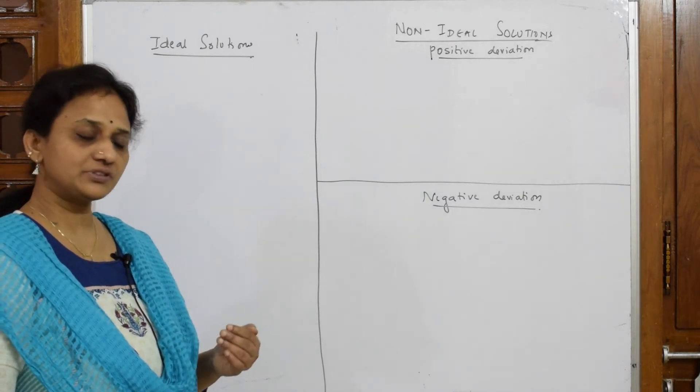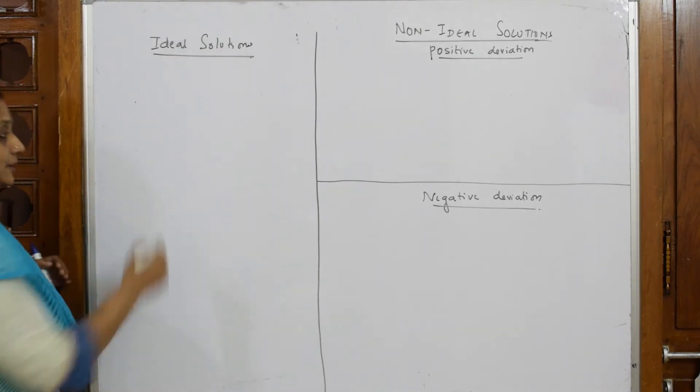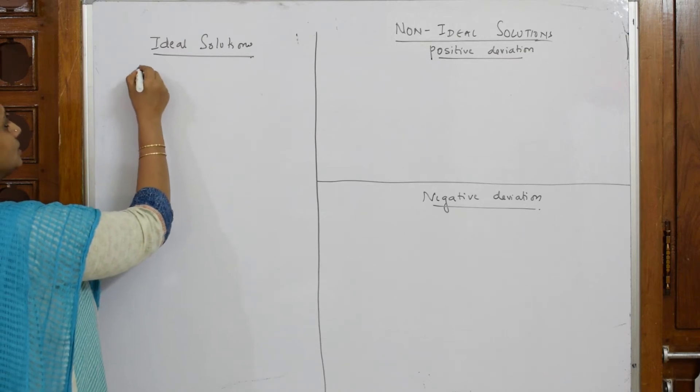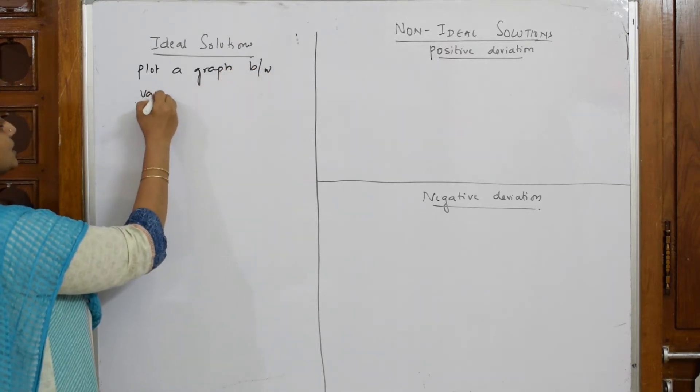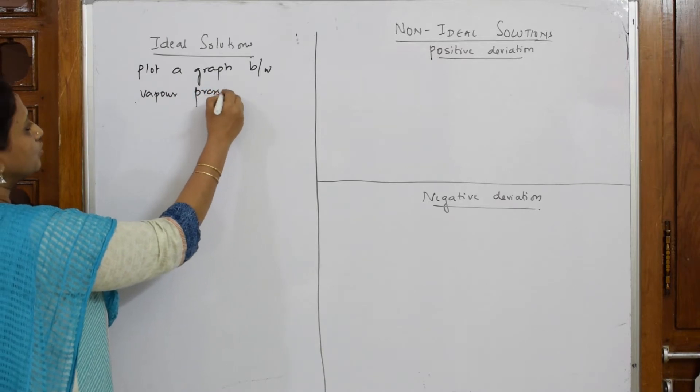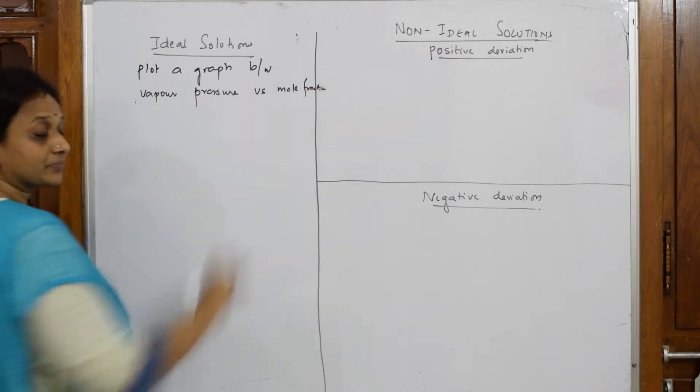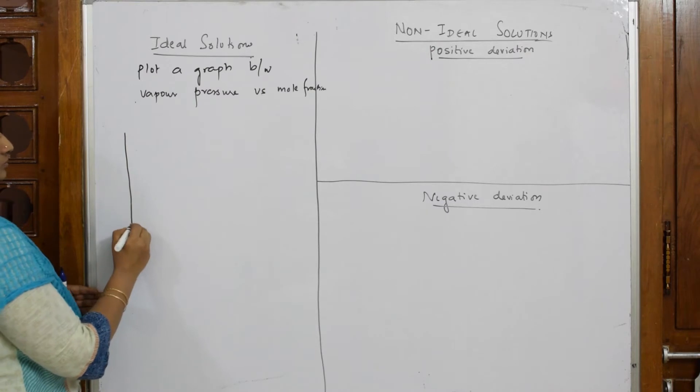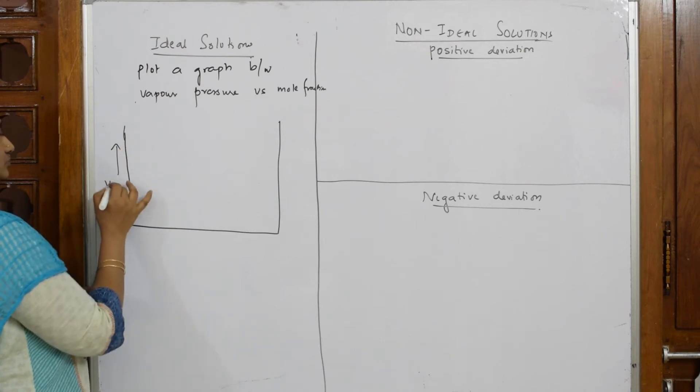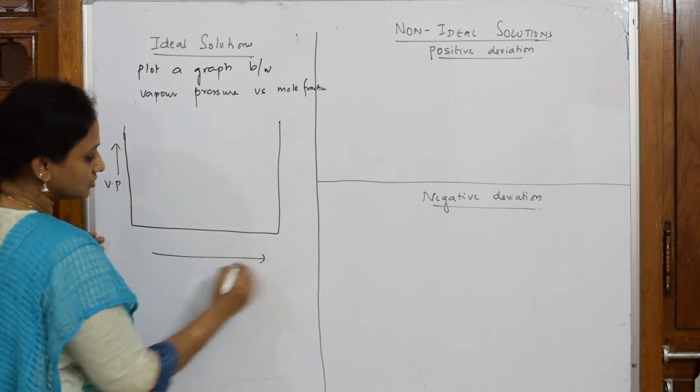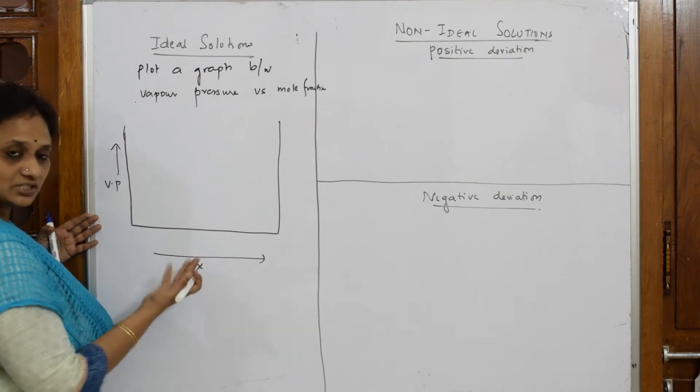Let's start. Basically an ideal solution, for plotting the ideal solution graph, first important thing: you're going to plot a graph between vapor pressure and mole fraction. This is the most important thing, everywhere it is the same. So you're going to take vapor pressure on y-axis, you're going to take mole fraction on the x-axis. Now this mole fraction you're proceeding, suppose initially I said mole fraction so XA.